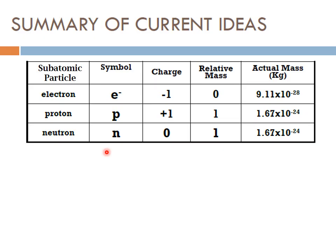Let's summarize our ideas of the atom. There are three subatomic particles — subatomic means within the atom. First, electrons: symbol is negative, charge is negative one, and relative mass is zero — even though electrons do have mass, it's so small in comparison it's considered negligible. Next, protons: symbol is p, charge is plus one, relative mass of one — much larger than an electron. Finally, neutrons: symbol is n, charge of zero because it is neutral, and relative mass of one — the same mass as a proton.